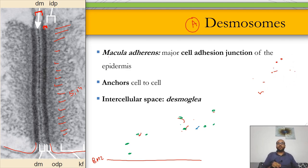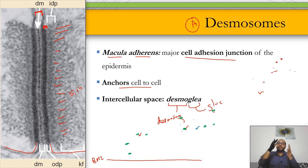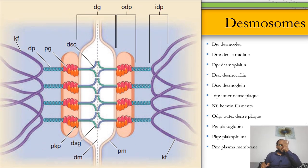Desmosomes are also known as macula adherens — adhering macules. They are the major cell adhesion junction of the epidermis, anchoring cell to cell. The intercellular space is known as desmoglia — 'desmo' from desmosomes, 'glia' is Greek for glue. Initially people thought a glue held cells together and named it desmoglia, but further study showed the structure extends inside both cells and knits them together.